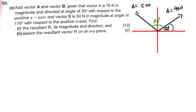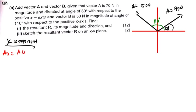After doing that, you have to resolve each vector into x and y components. Let's start with the x component. The x component of vector A: to resolve a vector into its x component, we use cosine. So Ax is equal to A cos theta.